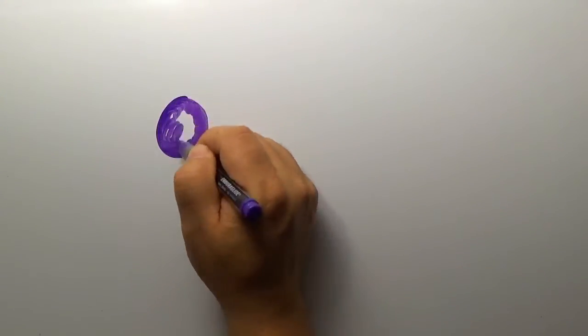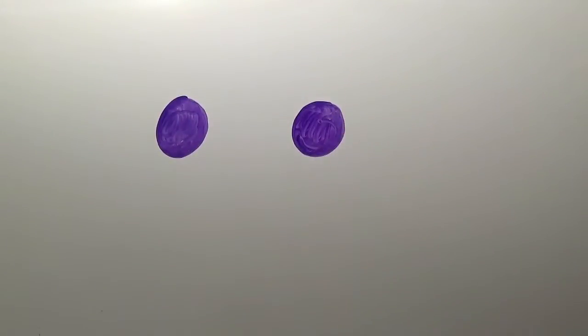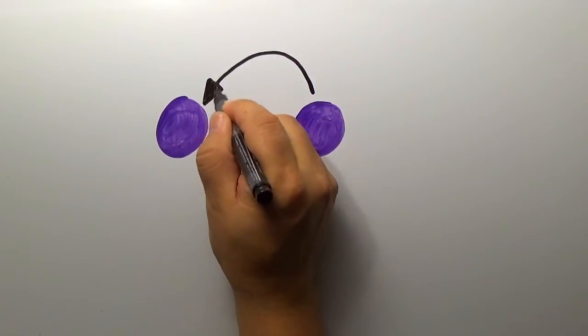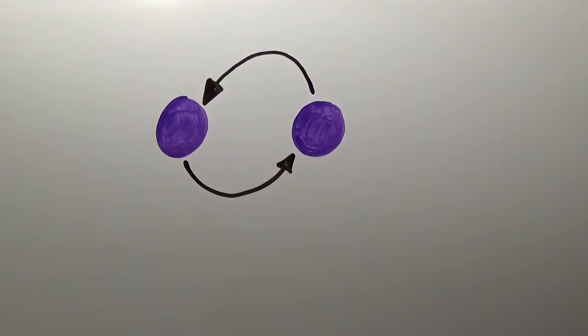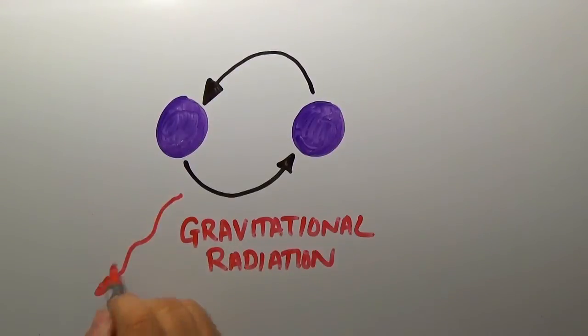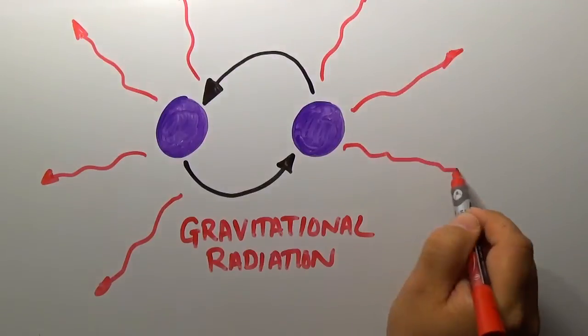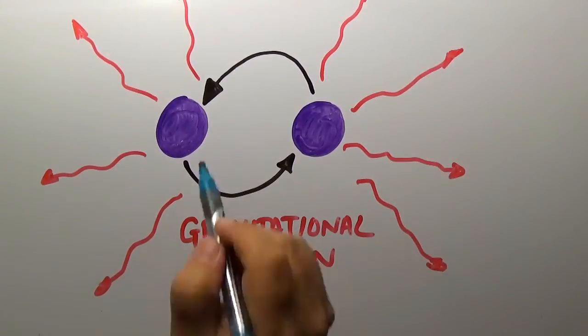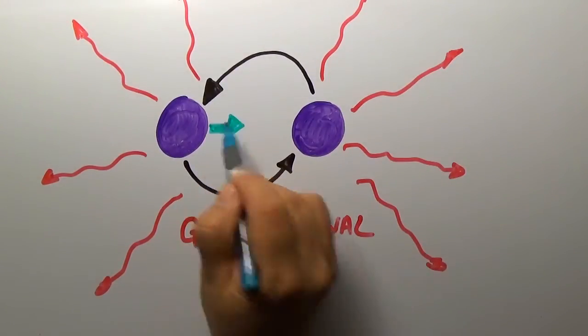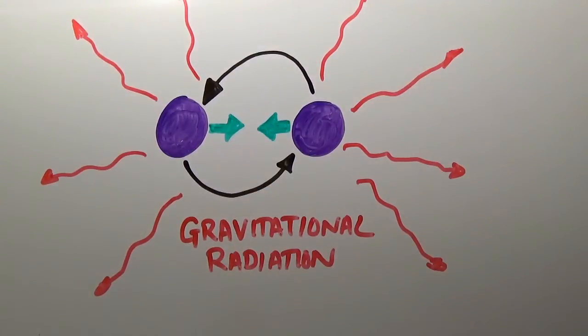General relativity predicts that when two compact stars orbit very close to one another, they will emit gravitational radiation, carrying away energy and driving the stars together. For 40 years, astronomers have watched this system and noticed its orbit shrinking by about 3.5 meters every year, at exactly the rate predicted by general relativity.